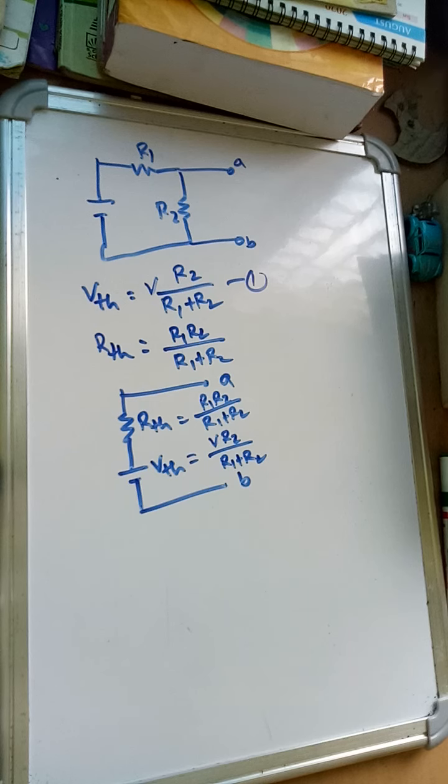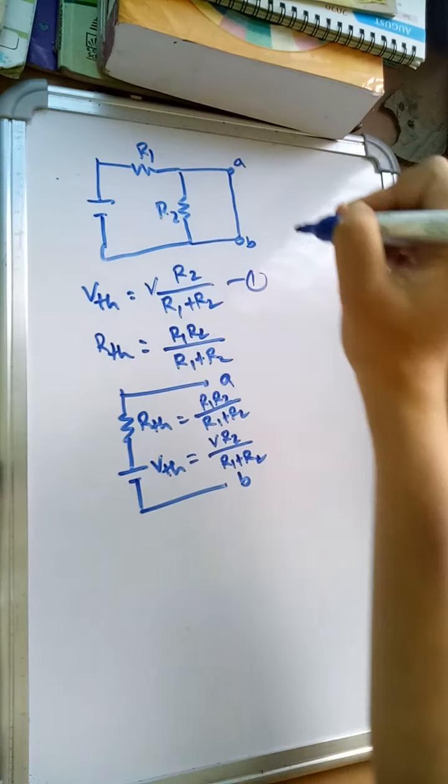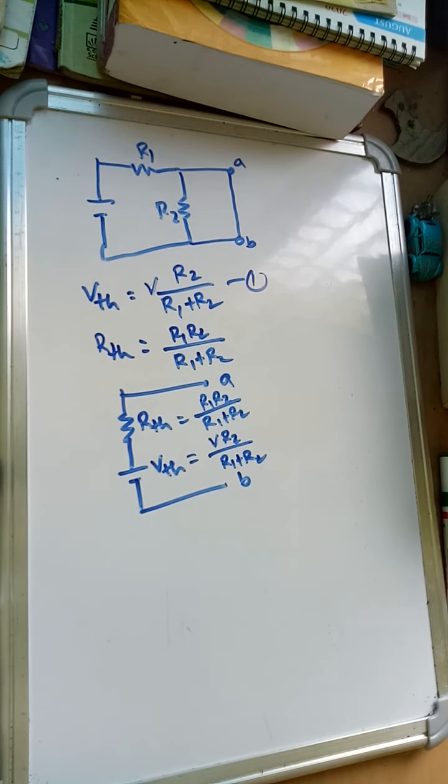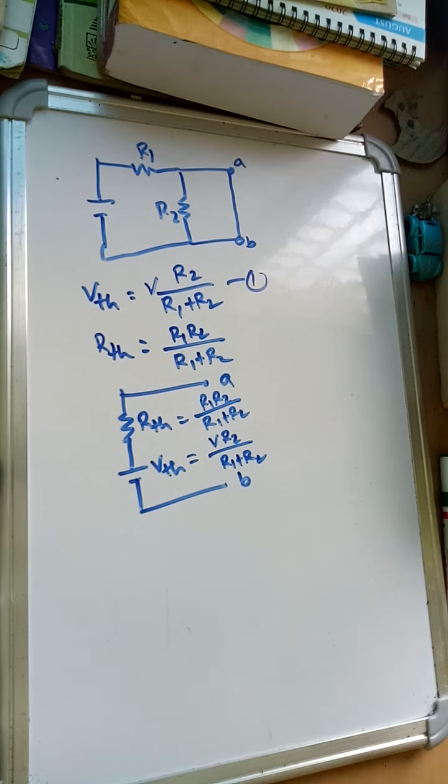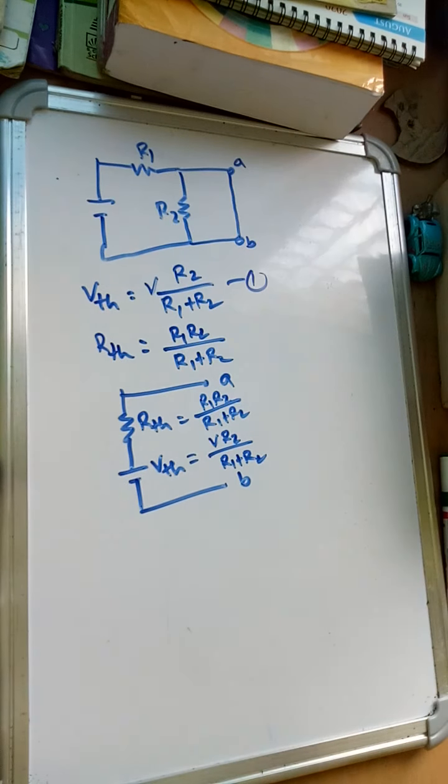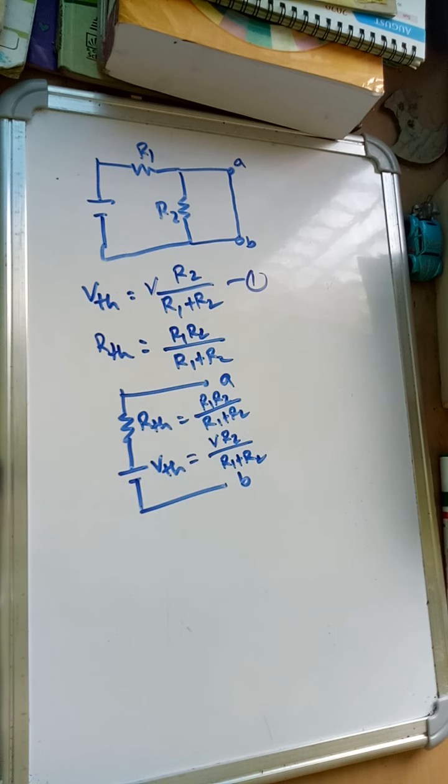This is the Thevenin's equivalent circuit. Now for Norton equivalent circuit, what to do? A short placed across the terminals A and B must be there. So for that, the R2 will be shorted. So for finding out the Norton equivalent circuit, we need to short A-B. In Thevenin's equivalent theorem you have to open circuit. So if you short it, this R2 will be omitted, so only R1 will come into the picture.